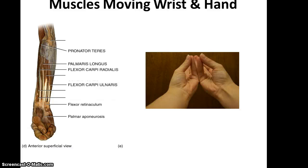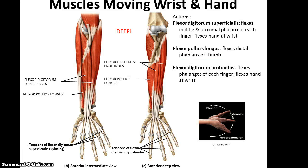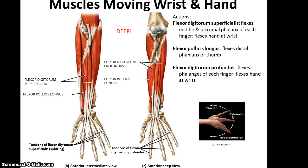It's worth pointing out that the palmaris longus is not present in about 20% of the population, and from various tests that have been done, it has no apparent effect whether you possess or lack the palmaris longus. Going deeper, we see a few more muscles that can move the wrist and hand. We have the flexor digitorum superficialis, which flexes the middle and proximal phalanges of each finger and also flexes the hand at the wrist. Then there's the flexor digitorum profundus, deep to the superficialis, which flexes the phalanges of each finger and also flexes the hand at the wrist.